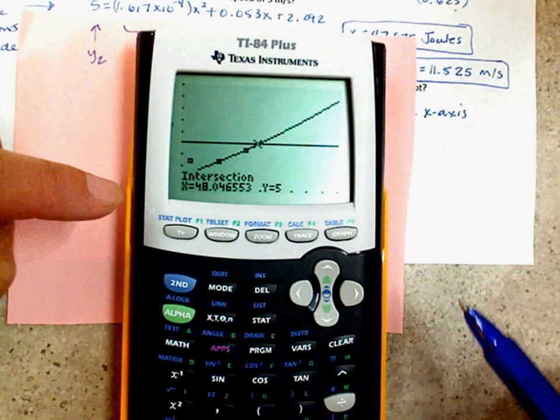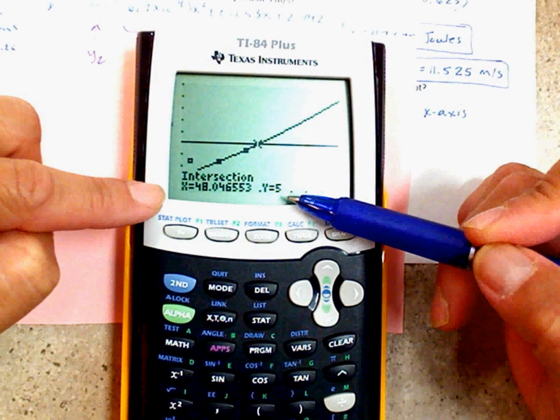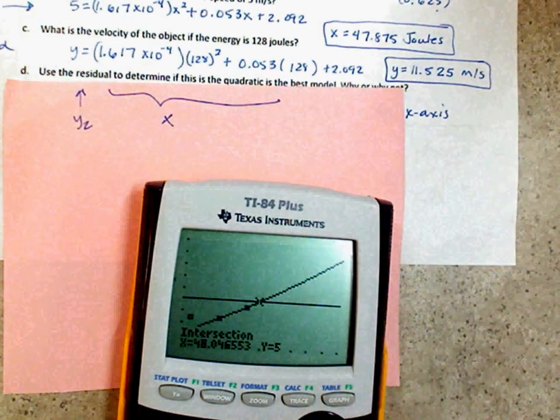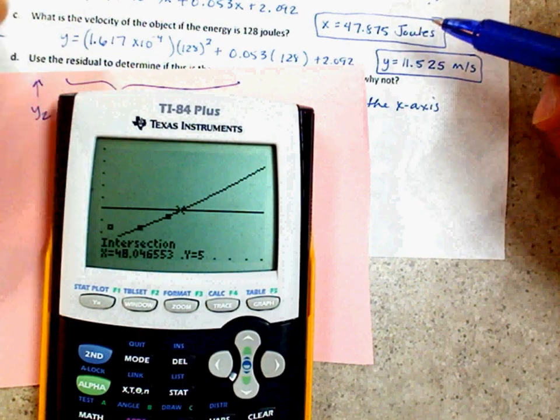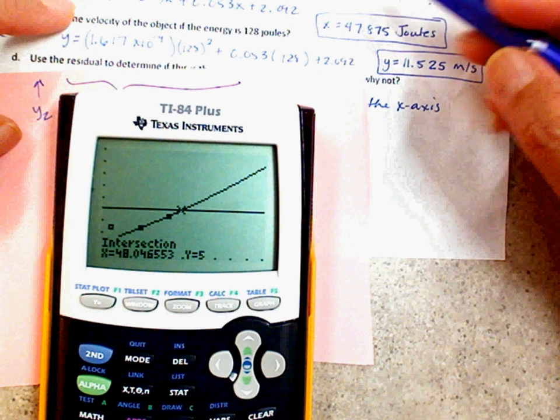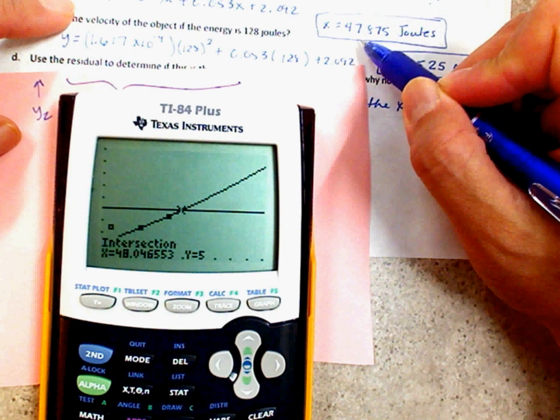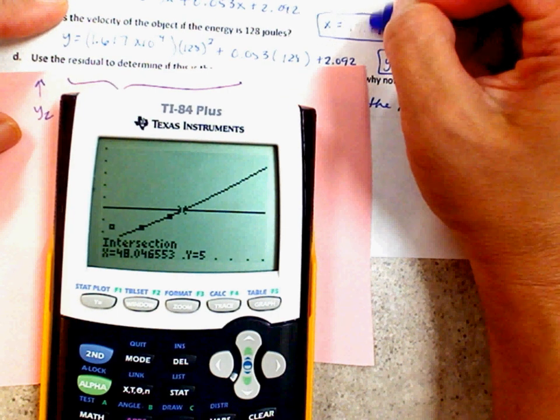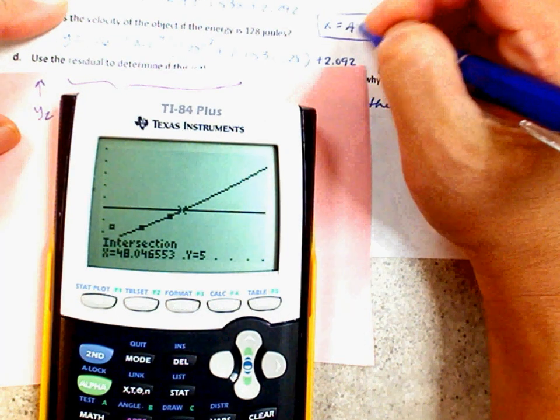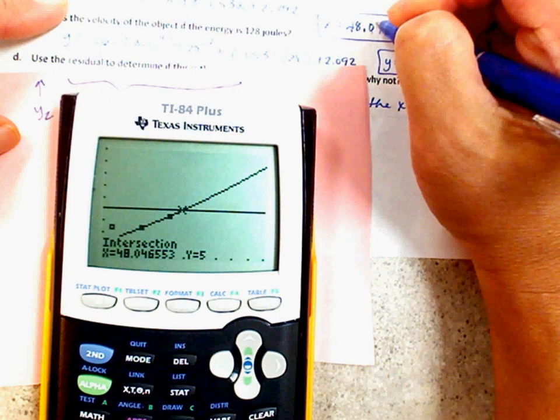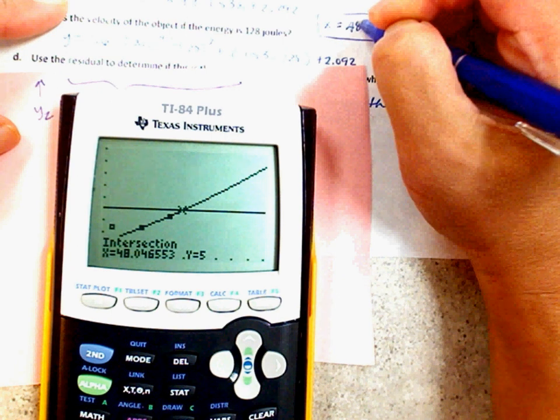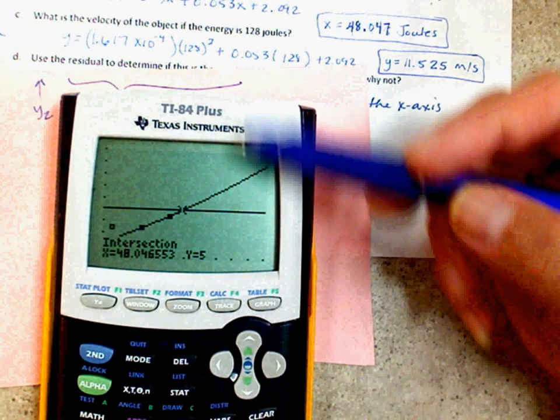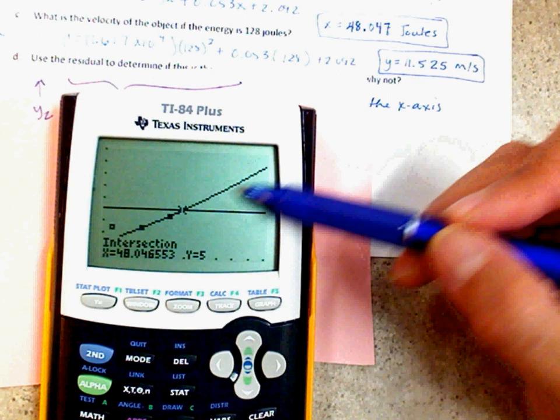So, the intersection is 48 and 5. So, when the energy, when the speed is at 5, the energy is 48.04. I wonder what I did right there. I need to double check that. I'm going to use the other one. 48.047. There you go. Alright. Jewels. And that's how you find it as well. So, this is the 5. There's your quadratic. And it tells you the intersection.